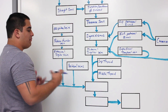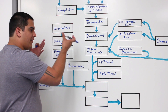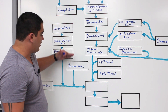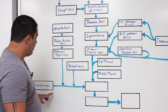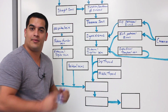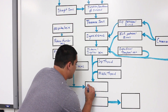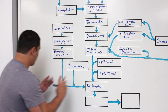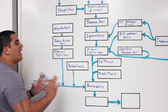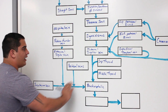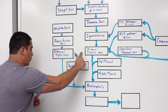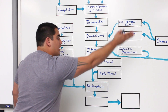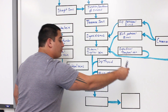We're treating this as one side — right or left, it doesn't matter. The subclavian vein and the internal jugular vein come together to form the brachiocephalic vein. So the right subclavian vein and the right internal jugular vein fuse to form the right brachiocephalic vein. Similarly, the left internal jugular vein and left subclavian vein form the left brachiocephalic vein.